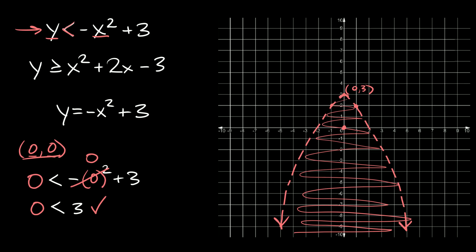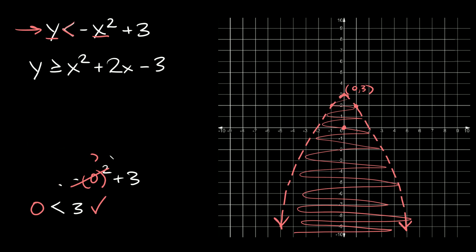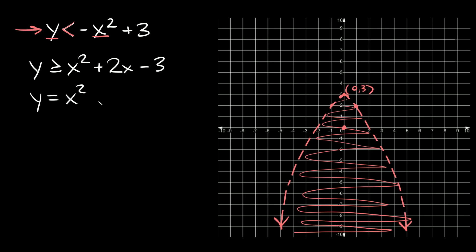Now that the first one is graphed, let's go through those same steps and graph the second inequality. We have y is greater than or equal to x squared plus 2x minus 3. Again, the first thing is just changing your inequality symbol to an equal sign, so y is equal to x squared plus 2x minus 3 — that's what we're going to graph.